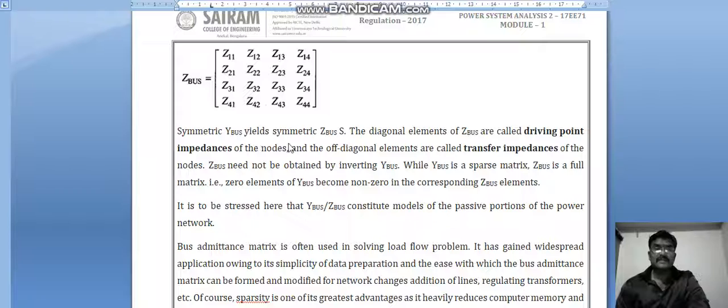Symmetric Ybus, Zbus—the diagonal elements of the Zbus are called driving point impedance.